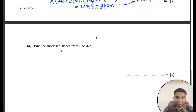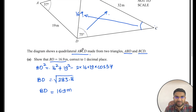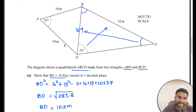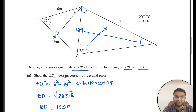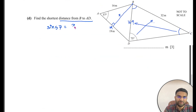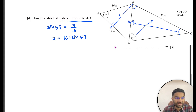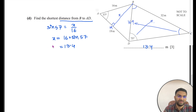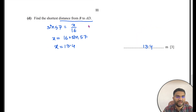Finally, find the shortest distance from B to AD. The shortest distance is the perpendicular distance from B to the line AD. In the right-angled triangle formed, AB = 16 is the hypotenuse and the angle at A is 57°. So x = 16 × sin 57° ≈ 13.4 metres.